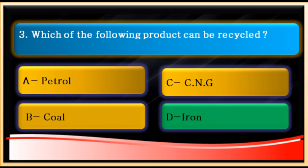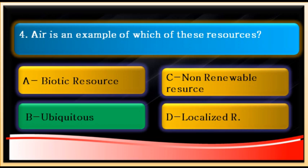Question number four: air is an example of which of these resources? Option A says it is a biotic resource — that is wrong, because air is non-living, making it an abiotic resource. Option C says air is a non-living, non-renewable resource — this is also wrong, because air gets renewed through various natural cycles like the carbon cycle.